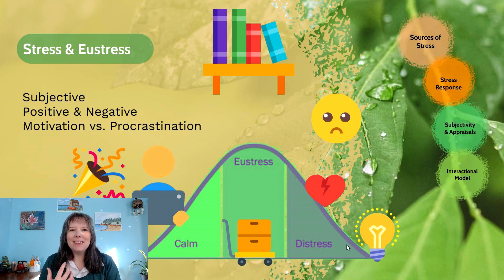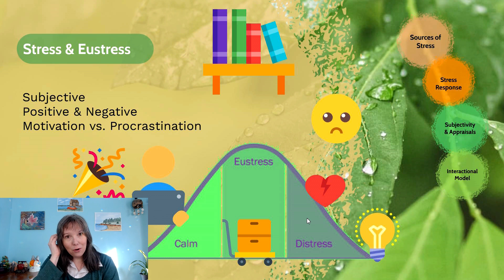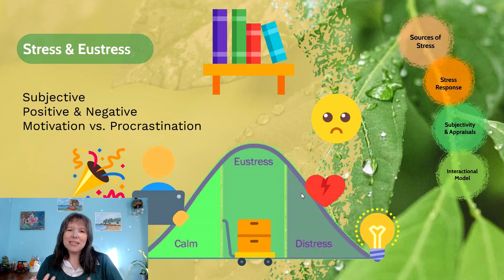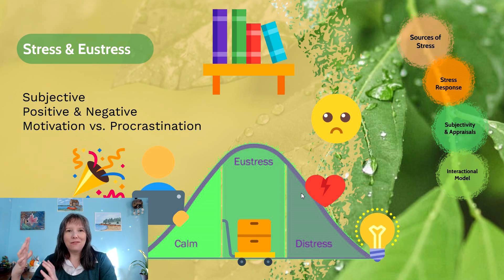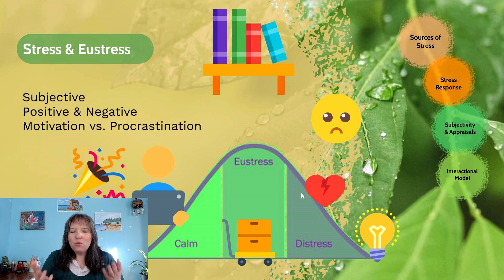Eustress versus distress: both involve increasing levels of stimulation and alertness, but eustress is the peak performance zone, whereas distress is when we're past that zone and starting to crumble. For example, when a test is far away you're calm and unmotivated to study. As it gets closer, you reach eustress and feel motivated to open the books. But right before the test, if you still don't know the material, you tip into the stress zone. Eustress is the moderate, goldilocks zone; distress takes us past it.